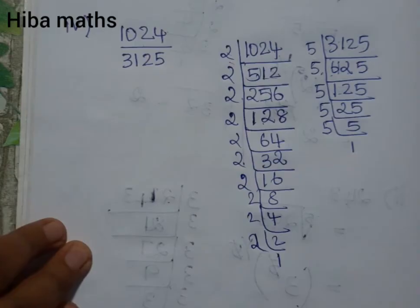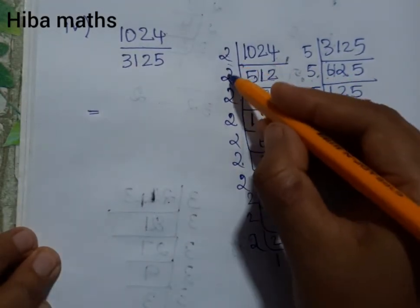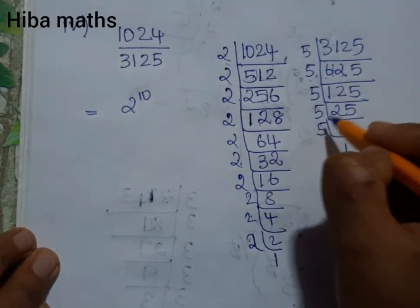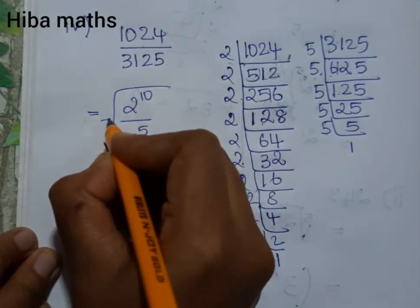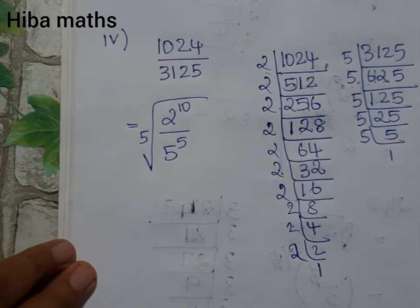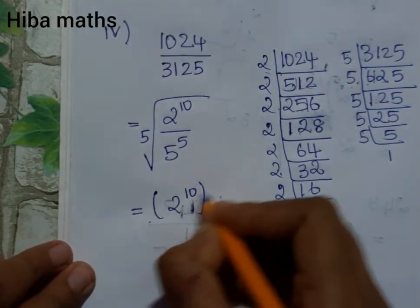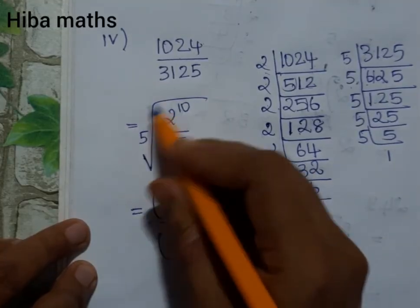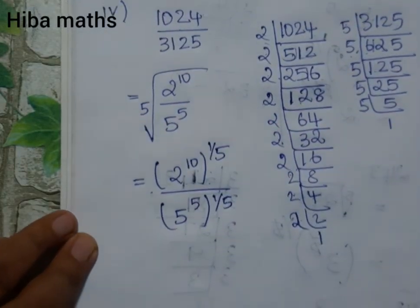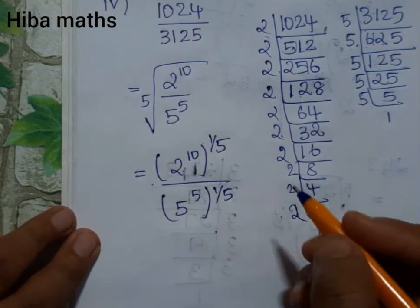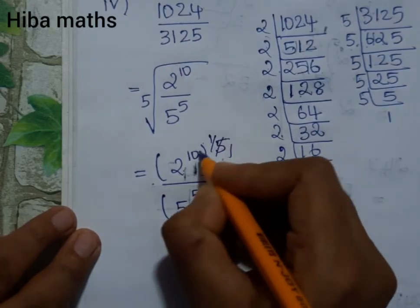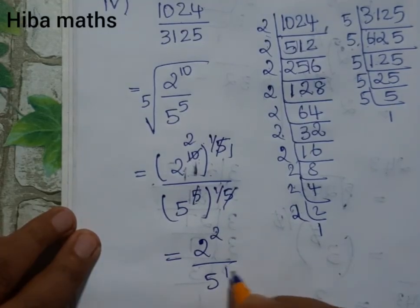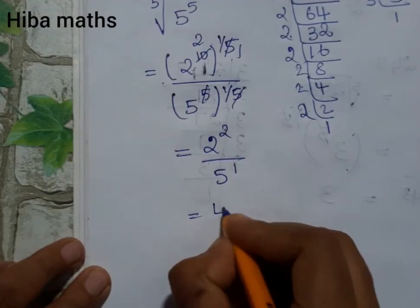So this is the sum we need to solve. We have 2 to the power 10 divided by 5 to the power 5, and we take the 5th root — that is, to the power 1 by 5. This gives us 2 to the power 10 times 1 by 5, divided by 5 to the power 5 times 1 by 5. The 5s cancel, leaving 2 squared divided by 5 to the power 1, which is 4 by 5. So the answer is 4 by 5.